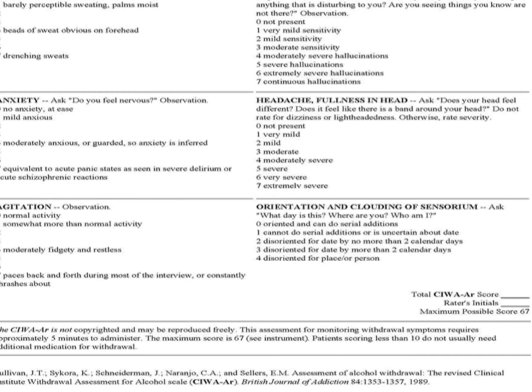All 10 parameters are scored up to 7 points, except the last one which carries only 4 points. That last parameter is orientation and clouding of sensorium. Ask the patient: what day is this, where are you, and who am I? Oriented and able to do serial additions is 0. Cannot do serial additions or uncertain about date is 1. Disoriented for date by no more than 2 calendar days is 2. Disoriented by more than 2 calendar days is 3. Disoriented for place or person is 4.